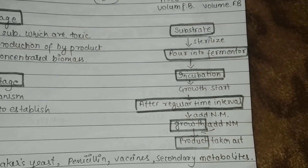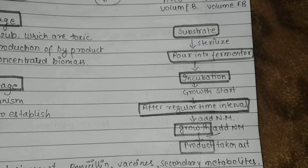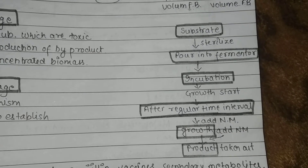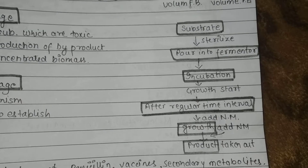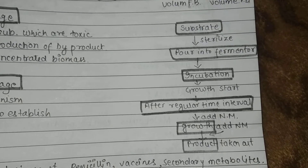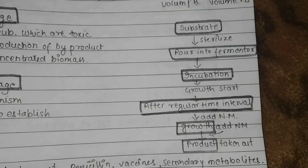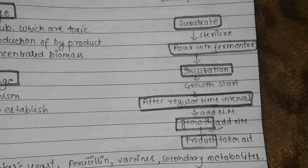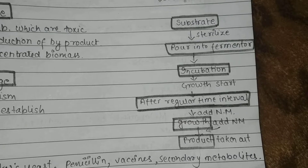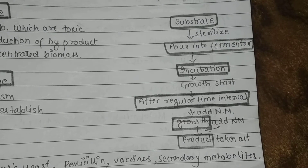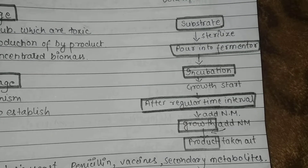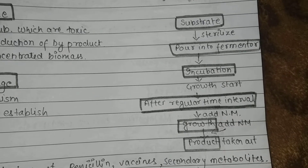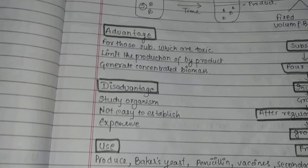Here is a simple flow chart: first we take the nutrient media, sterilize it, and pour it into the fermenter. Then the process of incubation takes place and growth starts. After regular intervals of time we add nutrient media and growth takes place. We add nutrient media again, and our product is taken out.